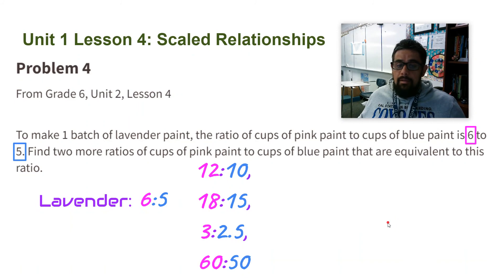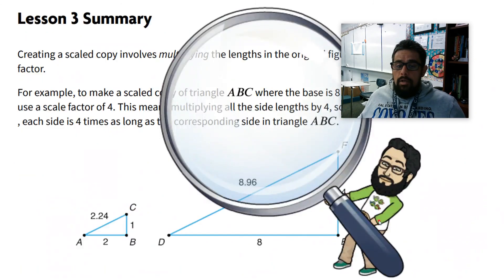Multiplied by 10: 60 parts pink and 50 parts blue is going to give me the same lavender. Thank you ladies and gentlemen.